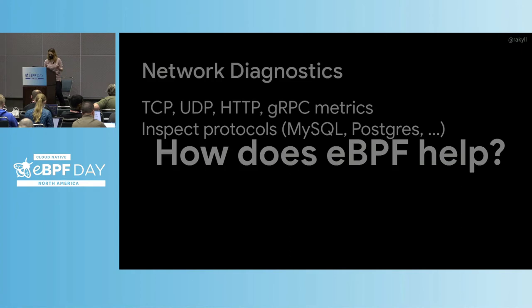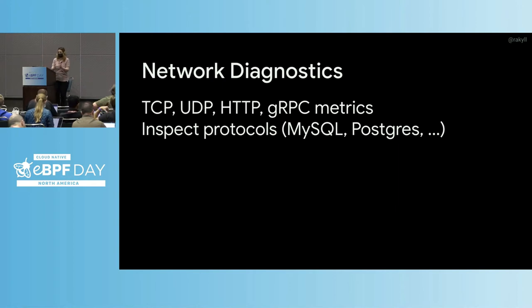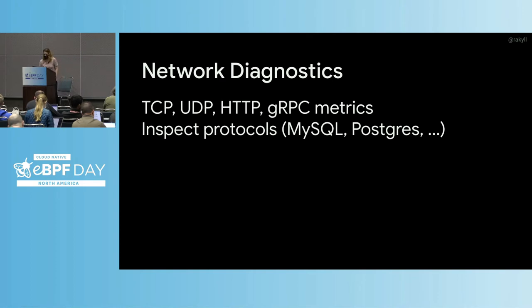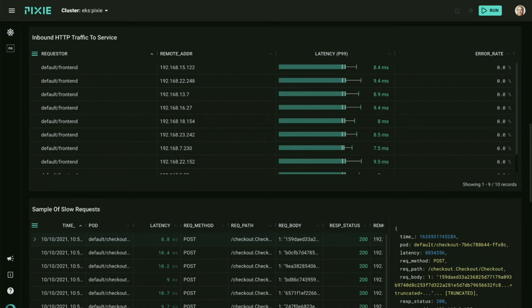So where does eBPF help? eBPF has a lot of interesting things — like network diagnostics. You can get out-of-the-box TCP, UDP, HTTP, high-level network events and turn them into metrics. You can also get very raw events. You can also inspect protocols. For example, this is a screenshot from Pixie. I just ran Pixie on my cluster, and this is all inbound HTTP traffic coming to my service without me making any changes or anything. You can see some of the sample of the slow requests and go inspect what actually happened.